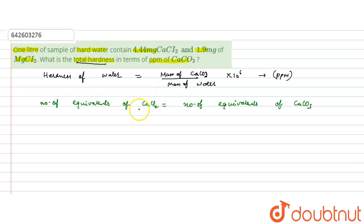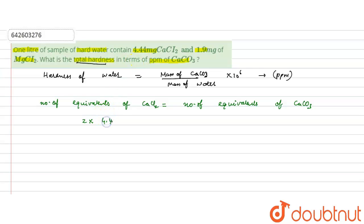The number of equivalents is equal to number of moles multiplied by valency factor. The valency factor is 2, since the charge on the ions is +2 and −2. So: 2 × (4.44 mg / 111 g per mol) for calcium chloride equals the equivalents of calcium carbonate.